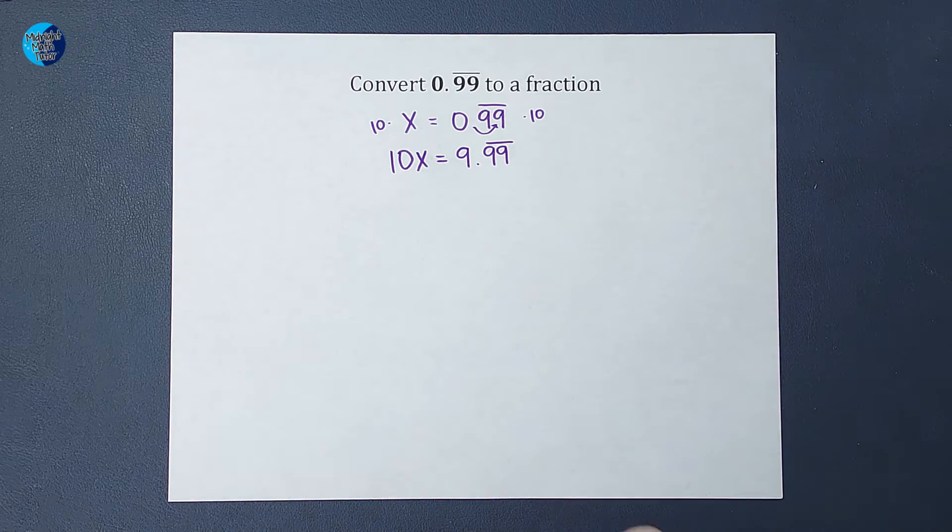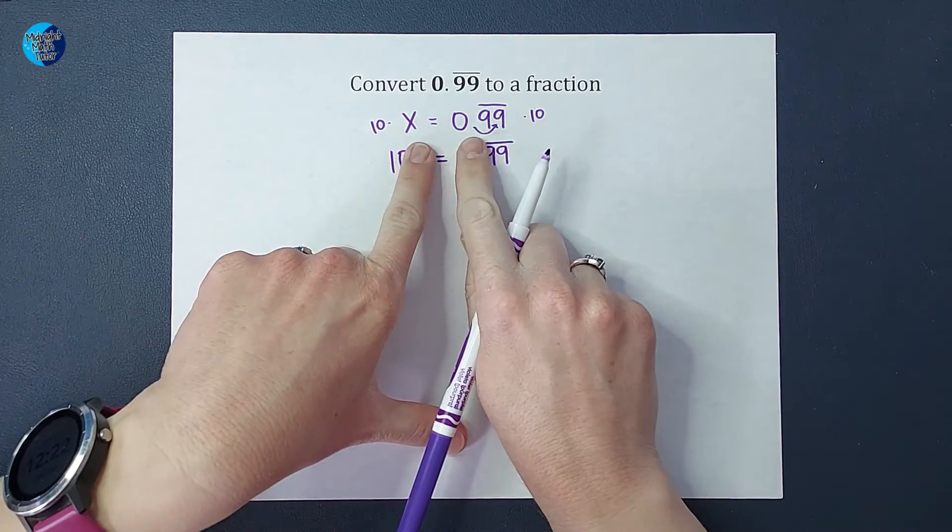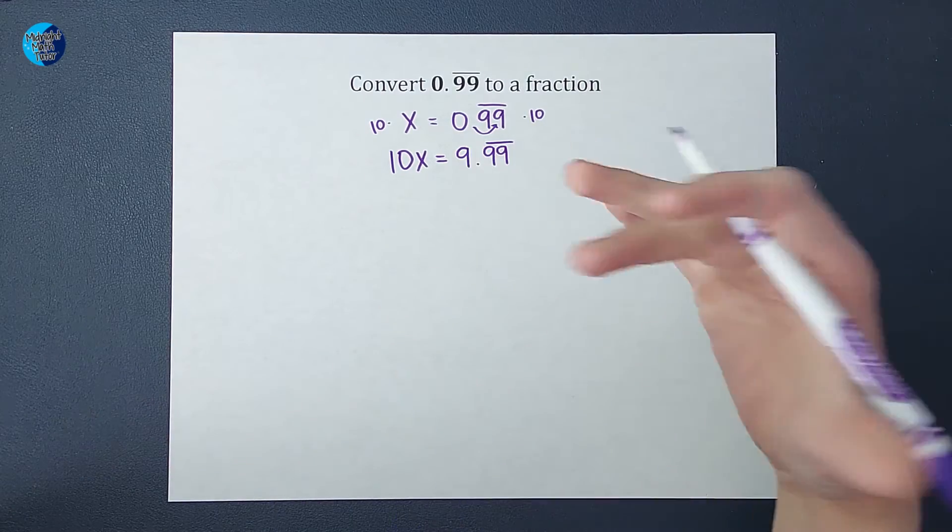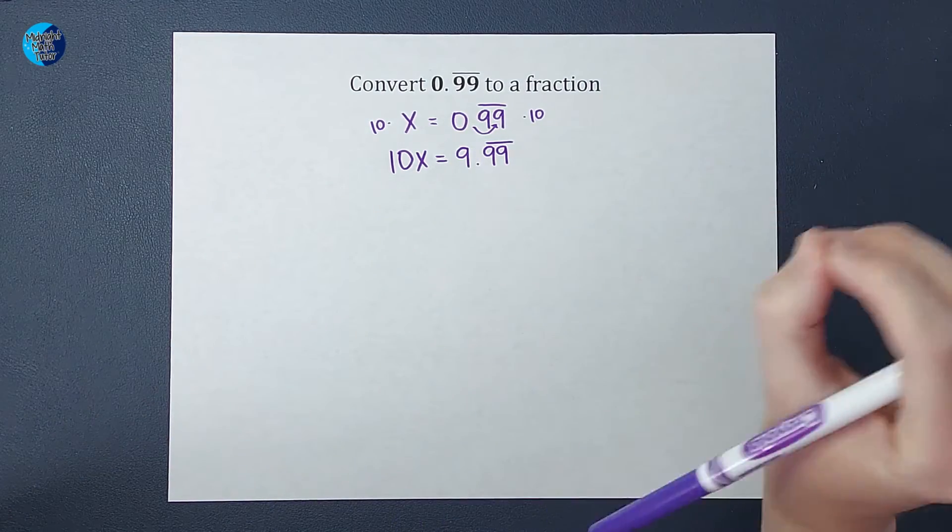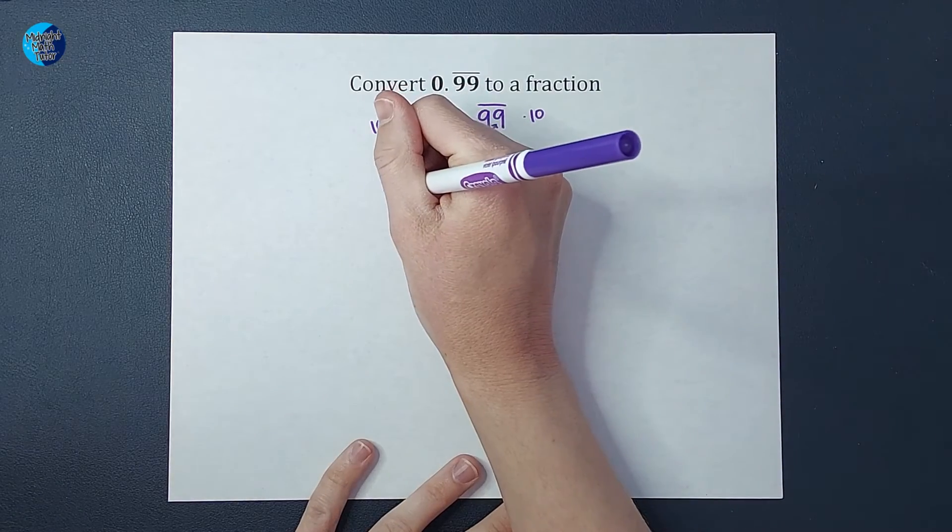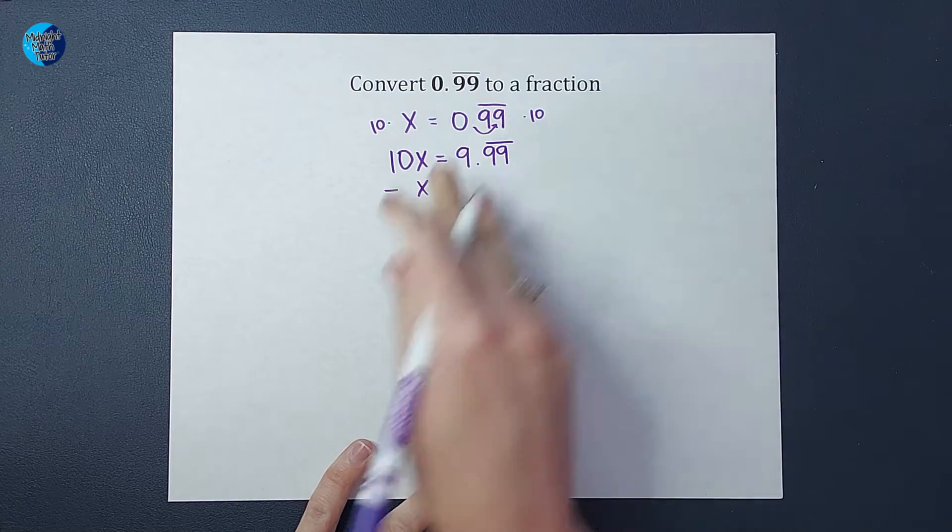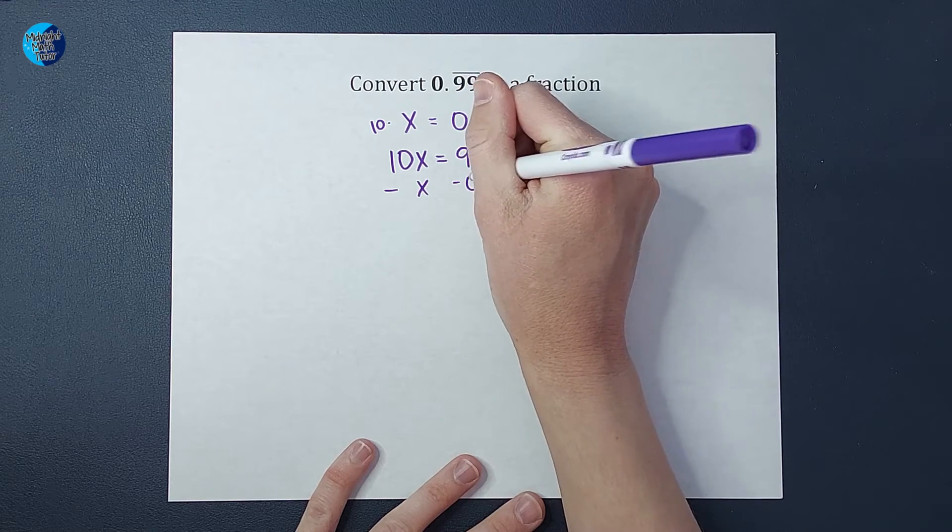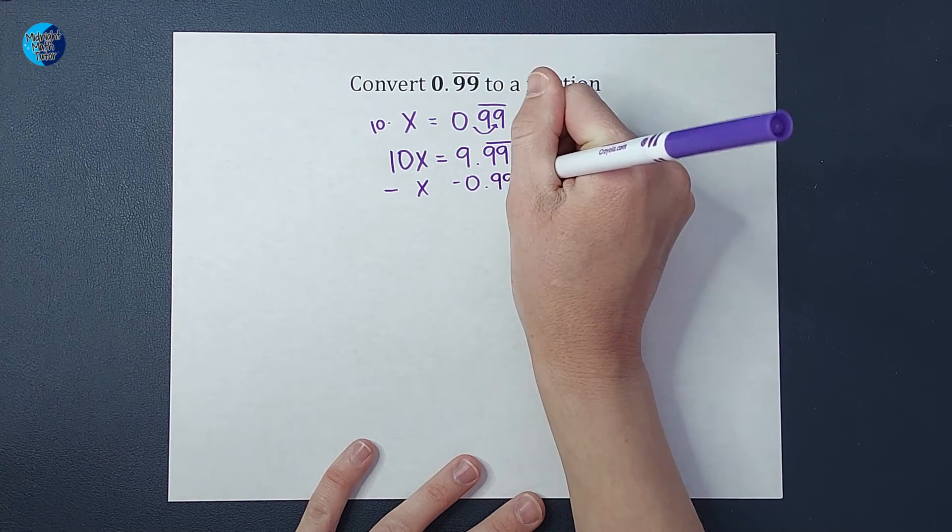The next thing we do is we are going to subtract X from both sides, but we need to remember what X equals. Remember from the beginning, we set 0.99 repeating equal to X. So I am going to subtract X from this side because we've got X's over here. From this side, I'm going to subtract the 0.99 repeating.